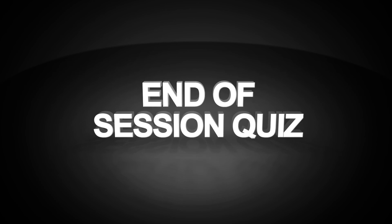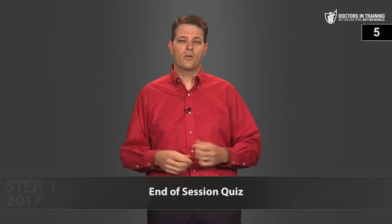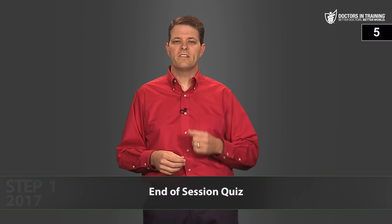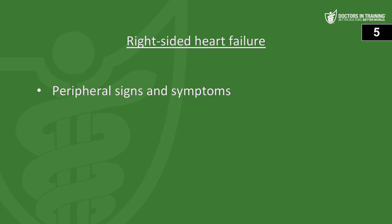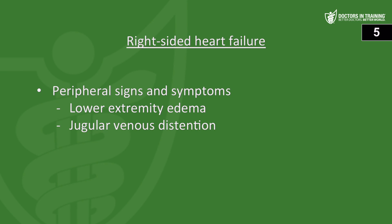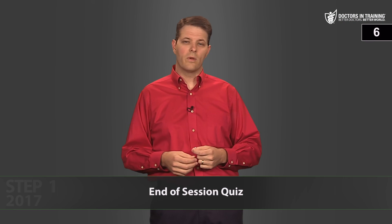That's it for now — we'll talk about how we treat CHF in the next video. First, the end-of-session quiz. Question one: what are the signs of right-sided heart failure? Right-sided heart failure has peripheral signs and symptoms — remember 'rest of the body' — such as lower extremity edema, jugular venous distension, and possibly hepatosplenomegaly or nutmeg liver.